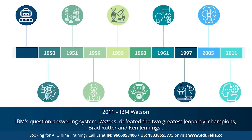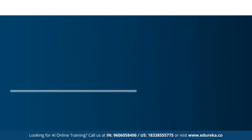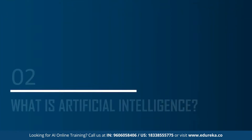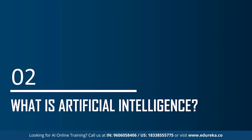Since the emergence of artificial intelligence in the 1950s, we have seen exponential growth in its potential. AI covers domains such as machine learning, deep learning, neural networks, natural language processing, knowledge base, expert systems, and so on. Now that you know a brief history, let's move on and understand what exactly artificial intelligence is.